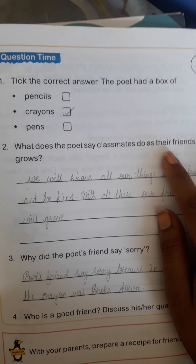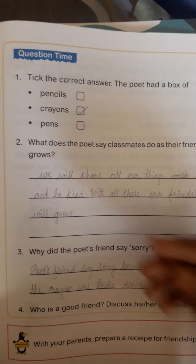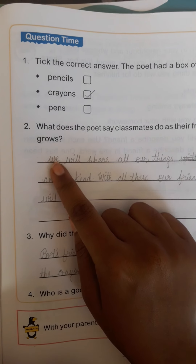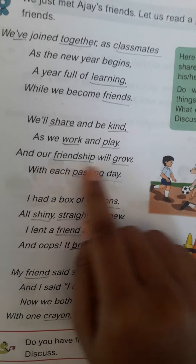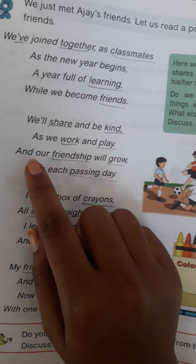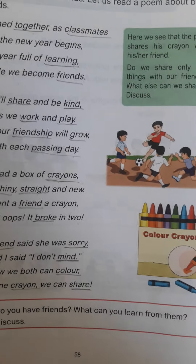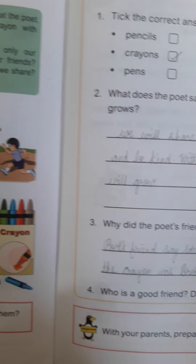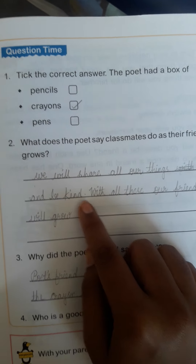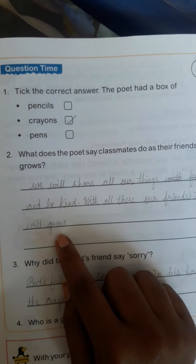Next, what does the poet say? Classmates do as their friendship grows. That means the poet says that friendship grows as classmates share. We will share and be kind as we work and play, and our friendship will grow. That means we will share our things and be so kind with our friends. That's why our friendship is growing.